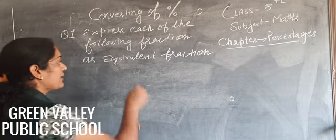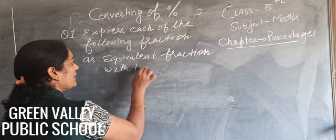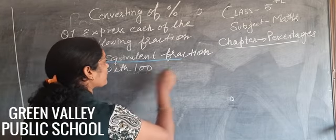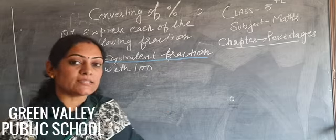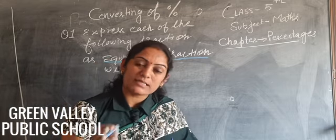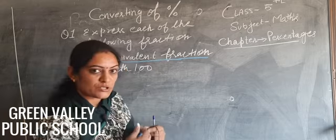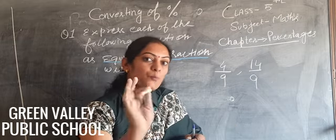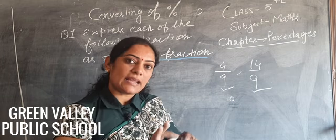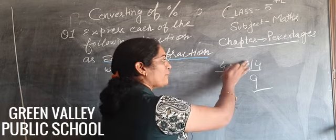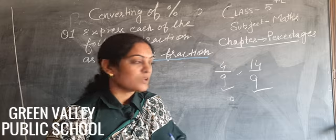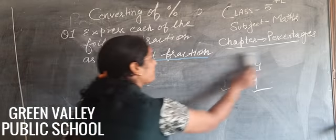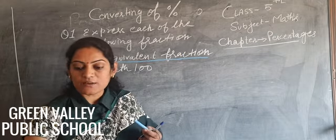Express each fraction as an equivalent fraction of 100 — with 100 as denominator. The most important thing to understand here is: what are equivalent fractions? Equivalent fractions are fractions that have the same denominator. For example, 4/9 and 14/9 — both have the same denominator 9, so they are equivalent fractions.